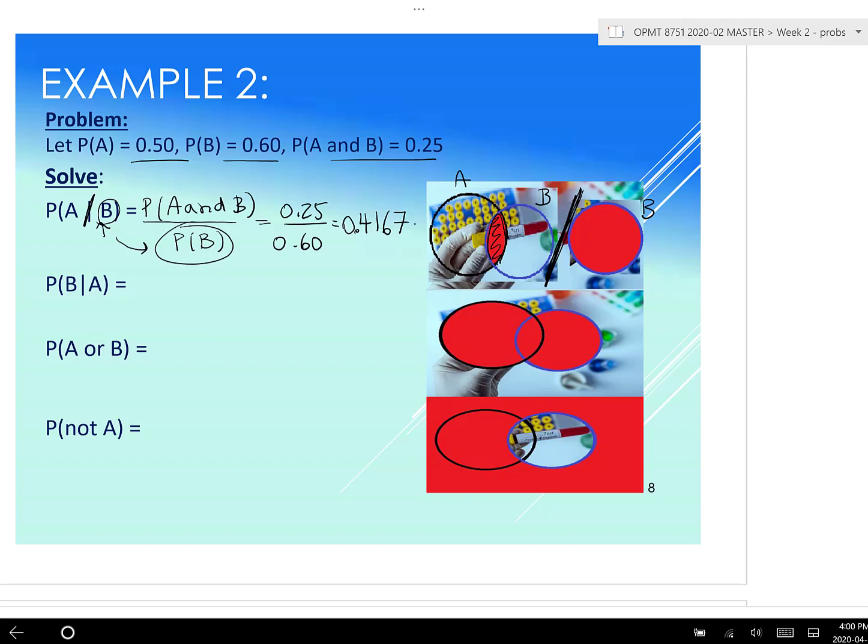Now the odds of B given A. Okay. So that would be the same, the and on top, probability of A and B divided by now. See if you can think of what we divide by now, we divide by what's on the bottom, which is A. Okay. So 0.25 divided by 0.50, and that will give us 0.50.